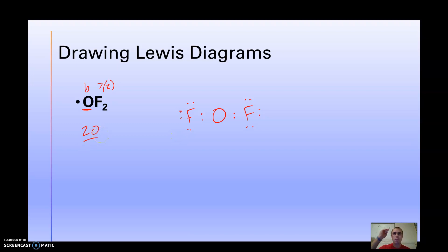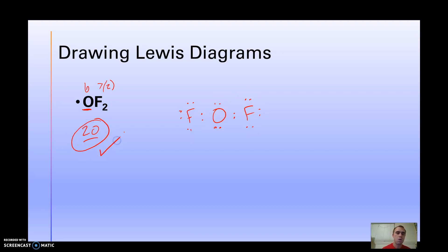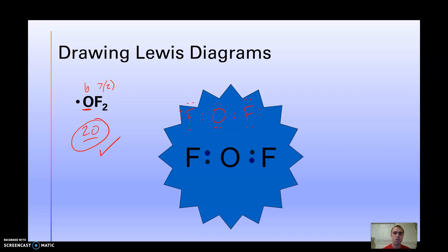Now count: 2, 4, 6, 8, 10, 12, 14, 16 — we don't have 20 yet. Remember the octet rule: every element wants eight electrons when bonded. Right now oxygen only has four — two here and two here — with two open spaces. So we put in two more electrons there. Now count: 2, 4, 6, 8, 10, 12, 14, 16, 18, 20. Now we're good — this is the dot structure for OF2.